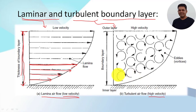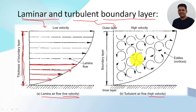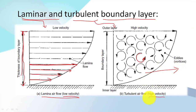the moving sub-layers break into small layers, and those layers try to resist the movement of adjacent layers. Due to this resistance, the movement of all sub-layers within the boundary layer becomes random, but the overall movement of these random boundary layers is still in the direction of the moving fluid. That is the turbulent boundary layer.